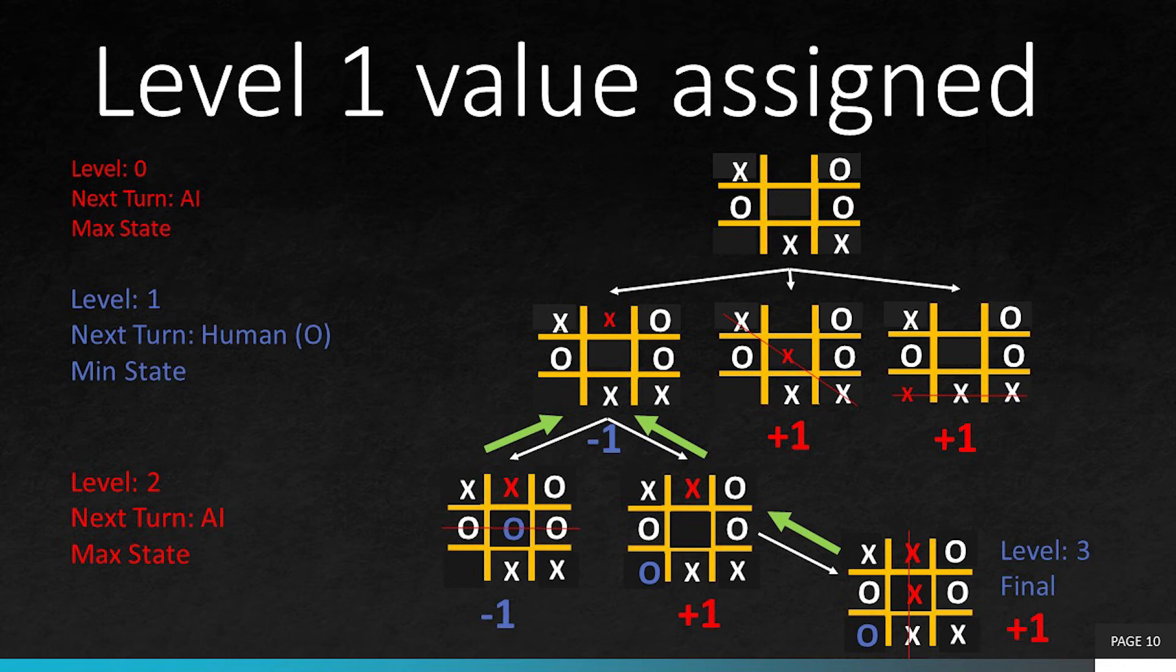This is because the human player wants AI to lose and hence it picks minus 1. If the human player picks plus 1, AI will win and that is not what the human player wants. So now we have all the three utilities for all the child nodes of our starting state.